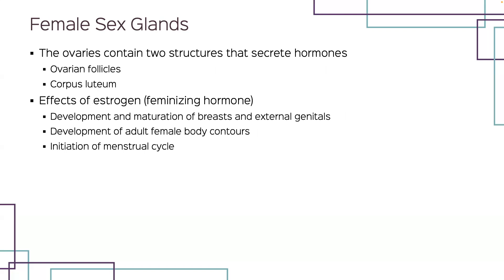A woman's primary sex glands are her two ovaries. Each ovary contains two different kinds of glandular structures: the ovarian follicles and the corpus luteum. Ovarian follicles are little pockets in which egg cells develop, and these follicles also secrete estrogen, the feminizing hormone. Estrogen is involved in the development and maturation of the breasts and external genitals, and is also responsible for the development of adult female body contours and initiation of the menstrual cycle. The corpus luteum chiefly secretes progesterone but also secretes some estrogen.